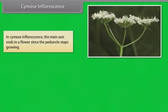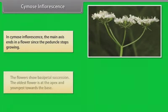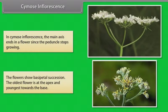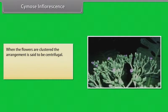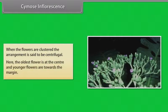In cymose inflorescence, the main axis ends in a flower. Since the peduncle stops growing, the flowers show basipetal succession — the oldest flower is at the apex and the youngest towards the base. When the flowers are clustered, the arrangement is said to be centrifugal, where the oldest flower is at the center and younger flowers are towards the margin.